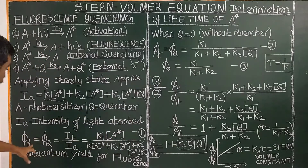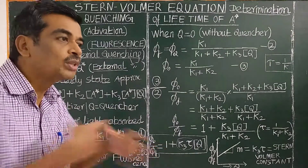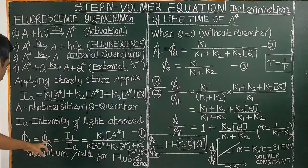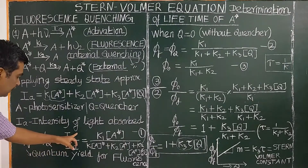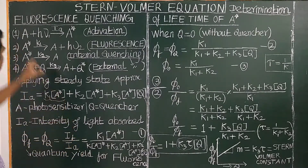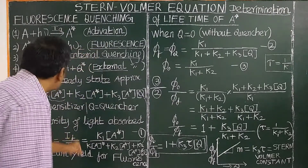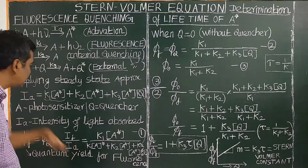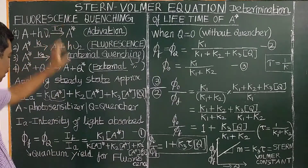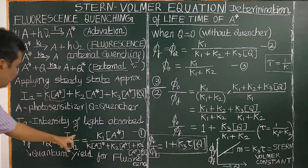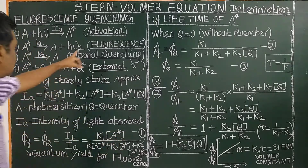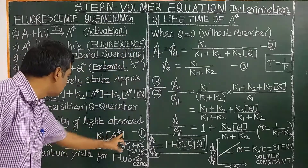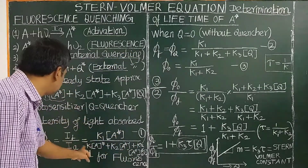The quantum yield for fluorescence in the presence of quencher, φ_Q, equals IEF divided by IA, where IEF is the intensity of fluorescence emission and IA is the intensity of light absorbed. Since fluorescence intensity is directly proportional to the rate of fluorescence decay, this equals K1[A*] divided by (K1[A*] + K2[A*] + K3[A*][Q]).